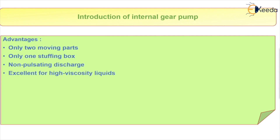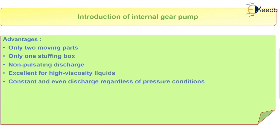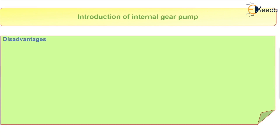Advantages of an internal gear pump: it has only two moving parts and one stuffing box. It has non-pulsating (constant) discharge. It is excellent for high viscosity fluids, and provides constant and even discharge regardless of pressure conditions. It also operates well in either direction.